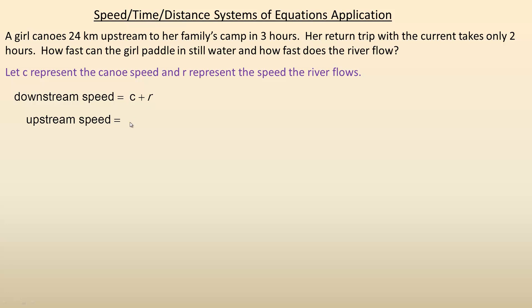For the upstream speed, it is the canoe speed minus the river speed, C - R, because she is paddling against the river and whatever speed the river is going, it slows her down by that much. So those are expressions for the downstream speed and the upstream speed.